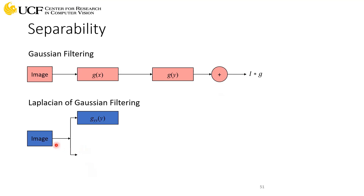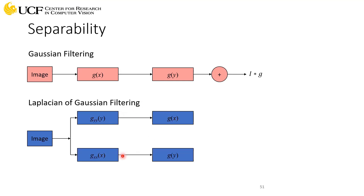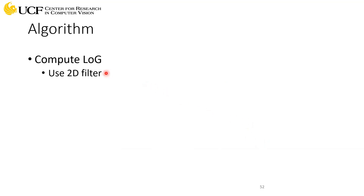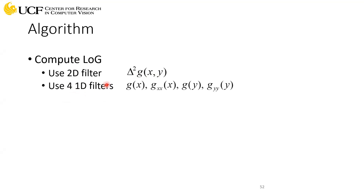For the Laplacian, given an image you first compute Gaussian filtering in the y direction, then the x direction, and again in x and y directions. The subscripts here indicate the order of derivatives — second-order derivative in each case. You add those values to get the Laplacian of your image. You have two options: use the 2D filter directly, or use four different 1D filters following the steps shown in the previous slide. Computing those filter values is just a one-step process and doesn't count toward computational complexity.